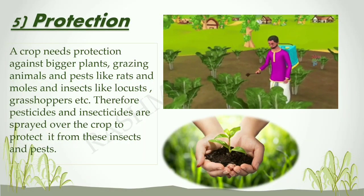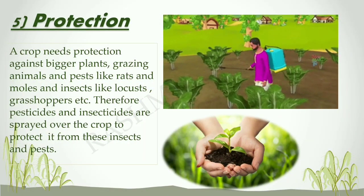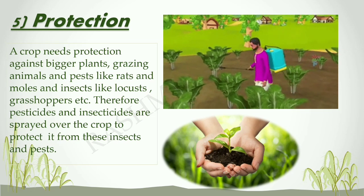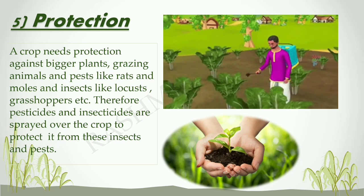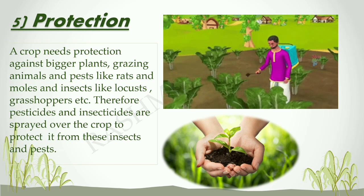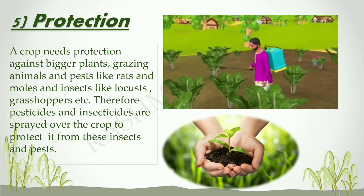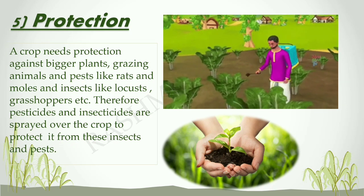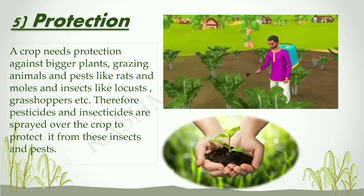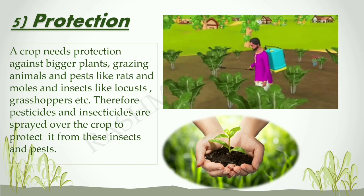As young saplings start growing into bigger plants, grazing animals can enter the field and destroy the crop. Putting a fence around the field can protect the crop. The crop is also protected from birds by putting bird netting or a bird scarer.